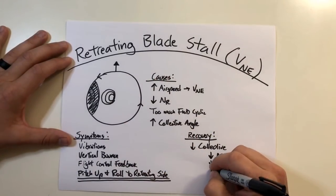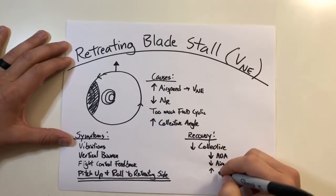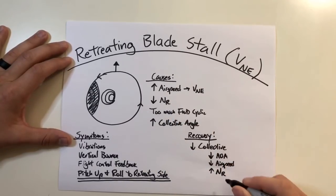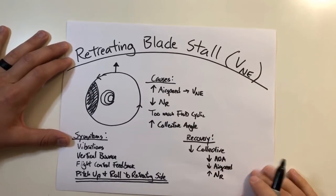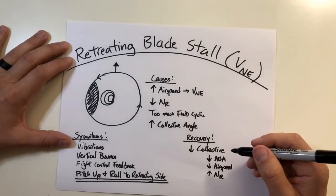Lastly, if you did have a low NR, lowering the collective gives your NR or your blade RPM a chance to speed up.